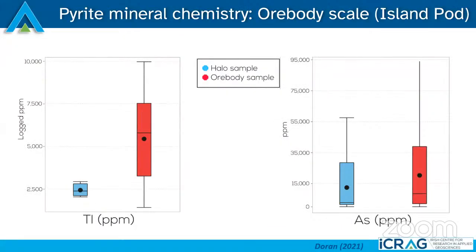Probably the most significant finding on the pyrite mineral chemistry front is why thallium and arsenic are very key elements. Going back to the Island Pod — the distal ore body quite far away from any known feeder zones — between the ore body and the halo we see a relative decrease in both thallium and arsenic as you step away from ore. While more sampling is needed to confirm this trend, it shows a lot of promise for thallium and arsenic as vectors for mineralization, as we see this relative increase of these elements as you move toward ore.